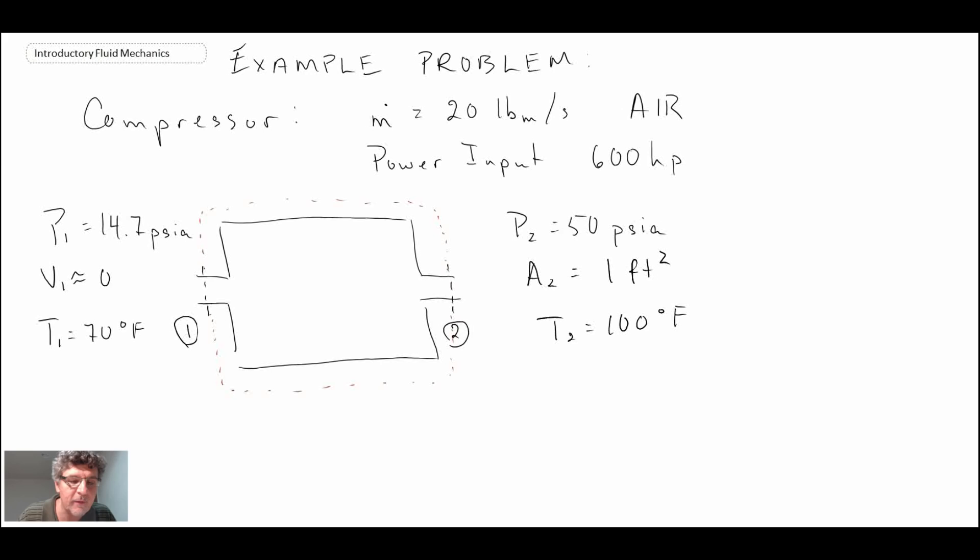So our compressor goes from 14 psi up to 50 psi, not that much of a pressure rise. We're told it's 20 pound mass per second at 600 horsepower, and the thing that they want us to find in this problem is the rate of heat transfer.